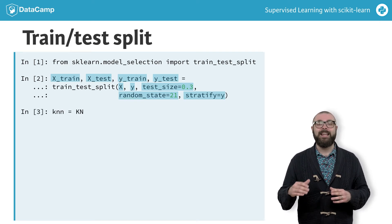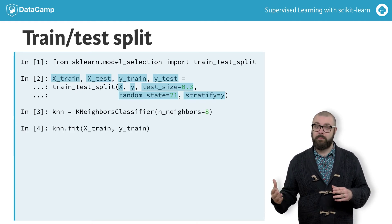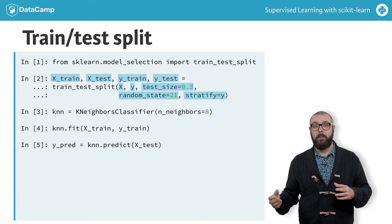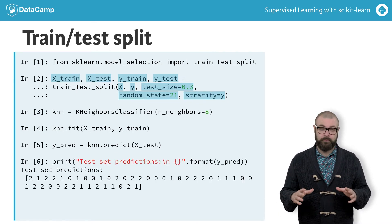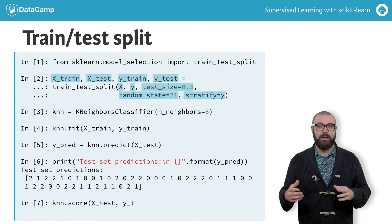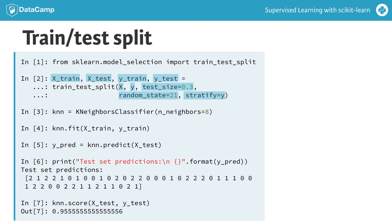We then instantiate our k-nearest neighbors classifier, fit it to the training data using the fit method, make our predictions on the test data and store the results as y_pred. Printing them shows that the predictions take on three values as expected. To check the accuracy of our model, we use the score method of the model and pass it X_test and y_test. The accuracy of our k-nearest neighbors model is approximately 95%, which is pretty good for an out-of-the-box model.